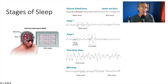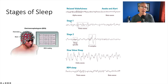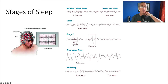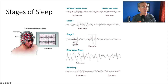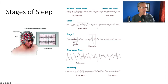When you lay down in bed you'll start in relaxed wakefulness and then begin to enter stage one sleep. What you see right away is the frequency starts to get lower — the waves spread apart. You also see theta waves appearing, which are high amplitude and low frequency, mixed in. Basically you're seeing the brain relaxing a little bit.